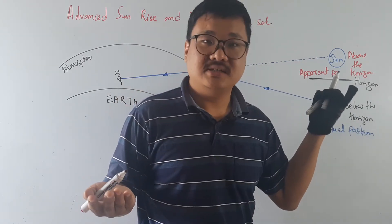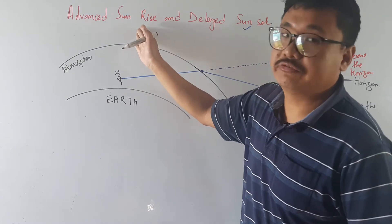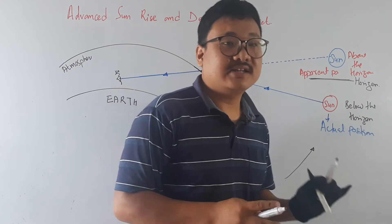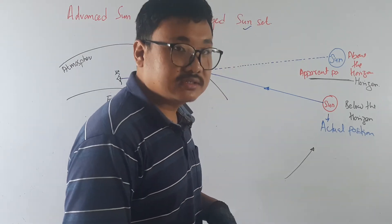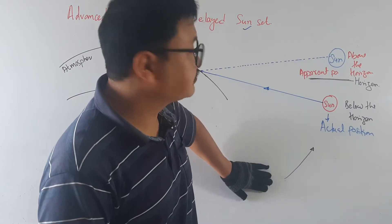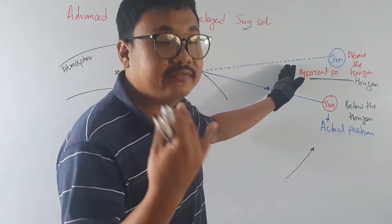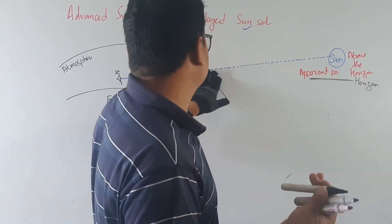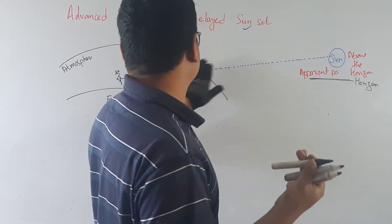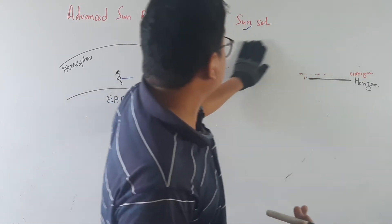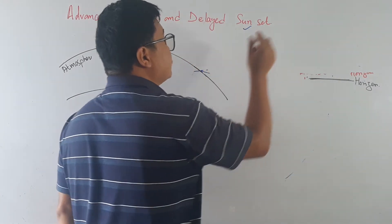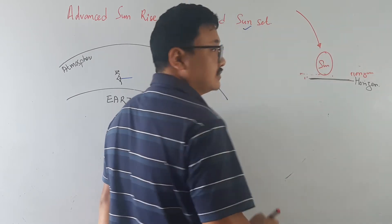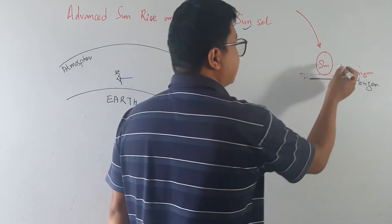Now what about the delayed sunset? The diagram will be very similar. For the delayed sunset, the sun is coming from above and going below the horizon — it is setting. Here, the sun is above the horizon and then moves below it.